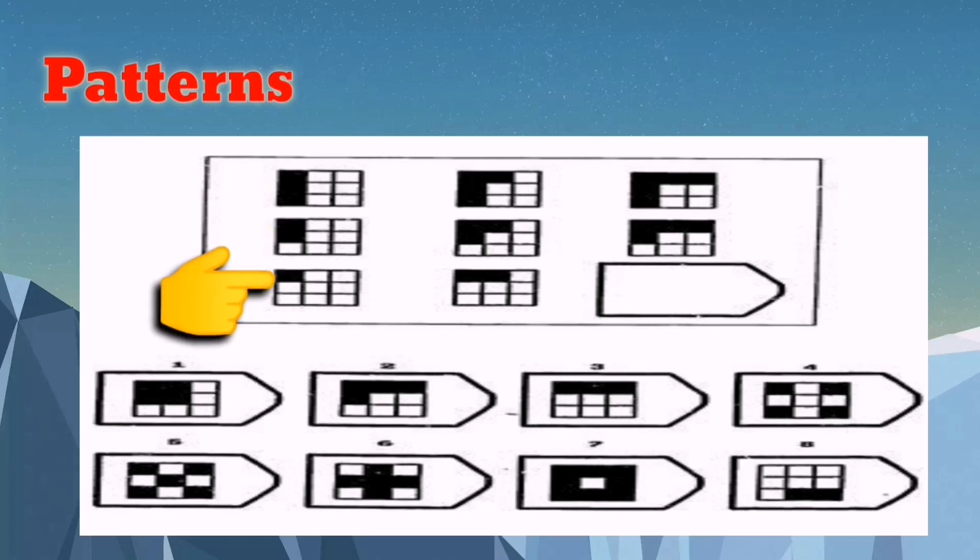Now in the second column, first four boxes were shaded, the next one three boxes were shaded, the next one two boxes were shaded. Can you see the pattern now? Okay, let's answer the third column.